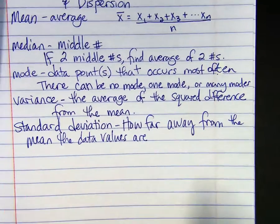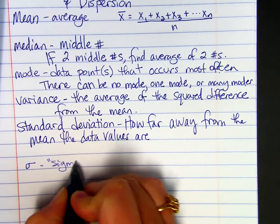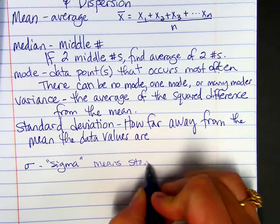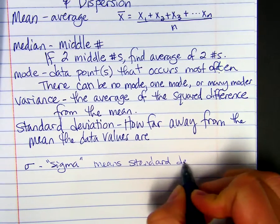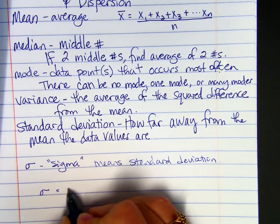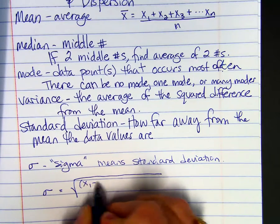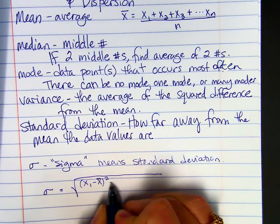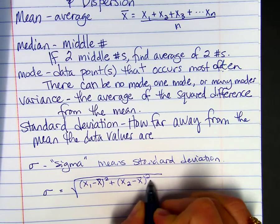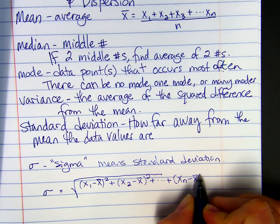So to indicate standard deviation, we use this Greek letter sigma, and you just call it sigma, kind of like pi, we just call it pi. And it just means standard deviation. So to find the standard deviation, we take the square root of the variance. So we take each value in our data set, subtract the mean, square it.